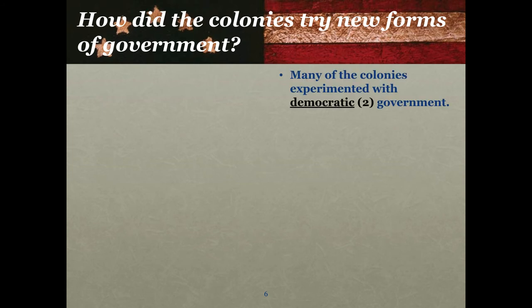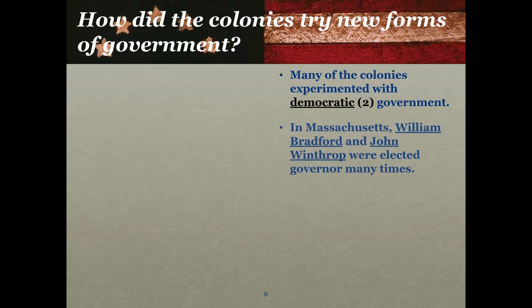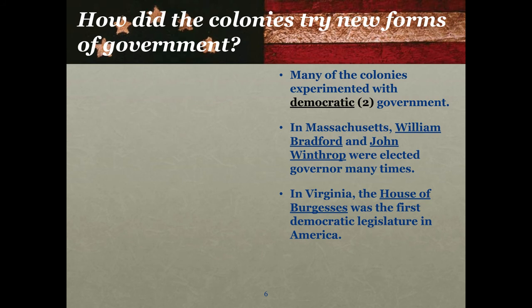Many of the colonies actually experimented with democratic government, and pretty much the world had not seen democratic government since the days of ancient Greece, which you may have learned about in sixth grade. When they came up with systems where people could actually vote for their own leaders, that was a new and refreshing thing for many colonists and they found that they liked it. In Massachusetts, two leaders were elected governor many times — the first elected leaders in the 13 colonies and in the Americas — William Bradford and John Winthrop, and since they're underlined you can bet those will be on the 13 colonies test. Further south in Virginia, the House of Burgesses was the first democratic legislature in America — a group of people elected to write the laws for the colony of Virginia.